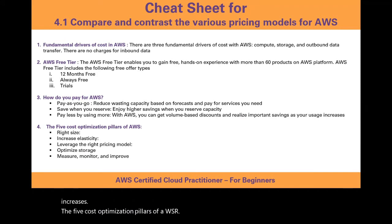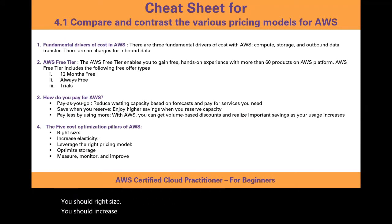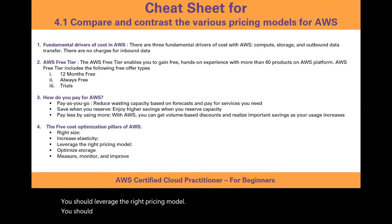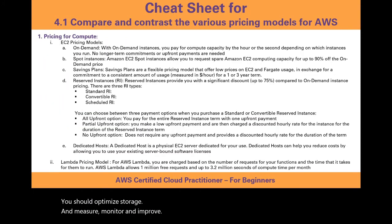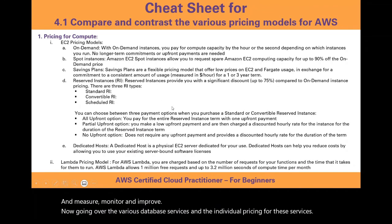The five cost optimization pillars of AWS are: right-size your resources, increase elasticity, leverage the right pricing model, optimize storage, and measure, monitor, and improve.